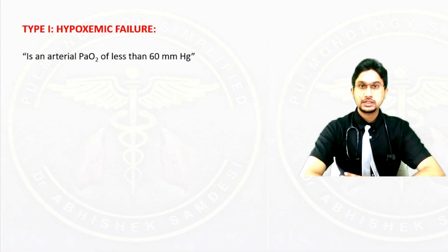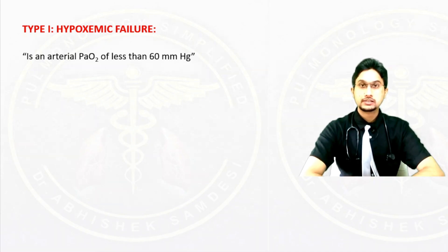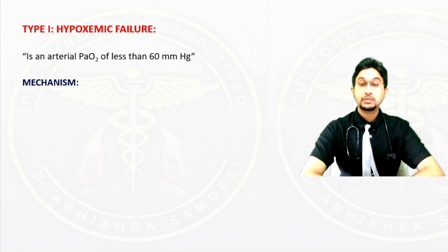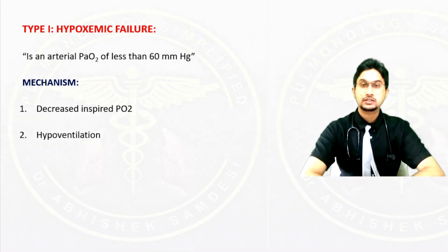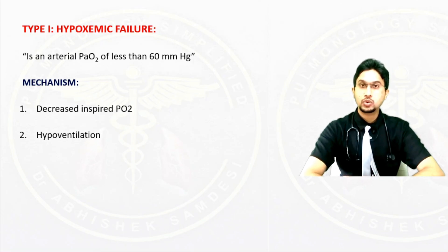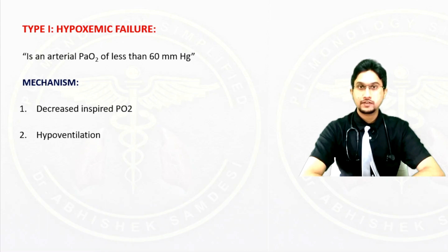In Type 1 respiratory failure, it is defined as an arterial PaO2 less than 60 mmHg and is also called hypoxemic failure. The mechanisms include decreased inspired oxygen, as in the case of high altitude; hypoventilation, as seen in patients with COPD or bronchial asthma. Any hypoventilation resulting in only hypoxemia but no hypercapnia would still be classified under Type 1 respiratory failure.